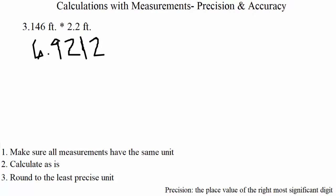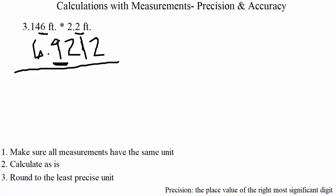After calculating, we round to the least precise unit. The first measurement, 3.146, is precise to the thousandths place. The second measurement, 2.2, is precise to the tenths. Tenths is less precise than thousandths, so I round my answer to the tenths place. In 6.9212, the digit to the right of the tenths place is 2, which tells me to round down. The final answer is 6.9 feet.